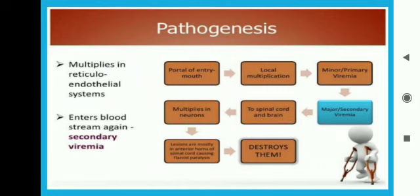The virus multiplies in the reticuloendothelial system. Its portal of entry is the mouth, where multiplication begins in the oropharynx. Then there is primary or minor viremia, followed by secondary viremia — viremia meaning the presence of virus in the blood. From there it transfers to the spinal cord and brain, multiplies in the neurons, and localizes mostly in the anterior horns of the spinal cord, causing flaccid paralysis and destroying them.